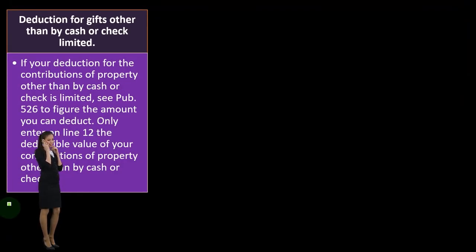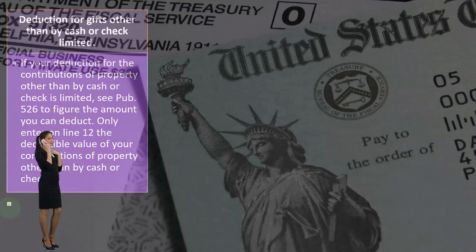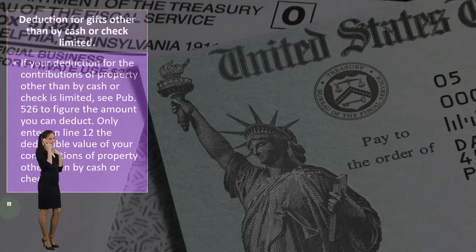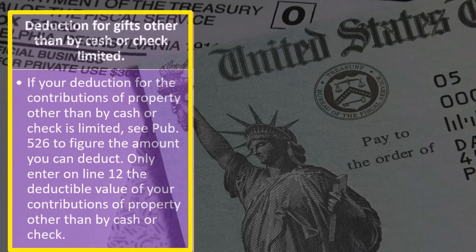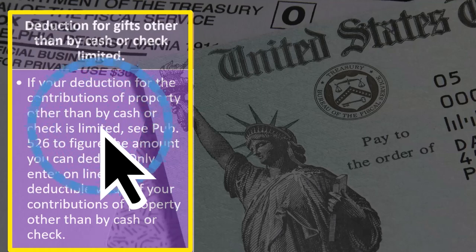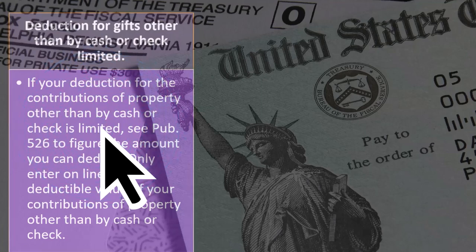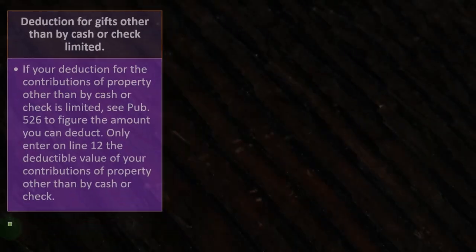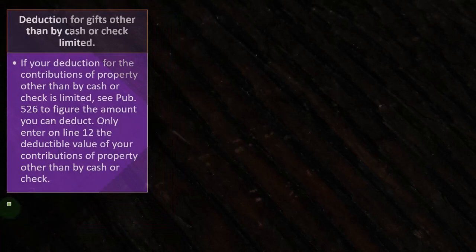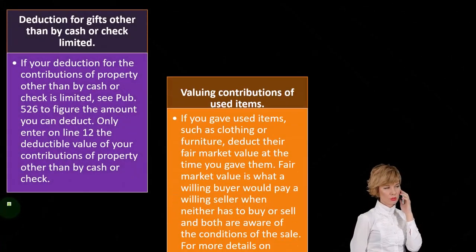Deduction for gifts other than by cash or check — limited. If your deduction for the contribution of property other than by cash or check is limited, you can see Publication 526 to figure the amount you can deduct. Only enter on Line 12 the deductible value of your contribution as property other than by cash or check.